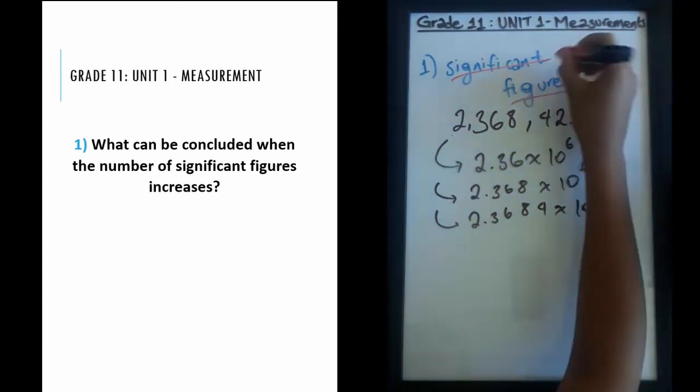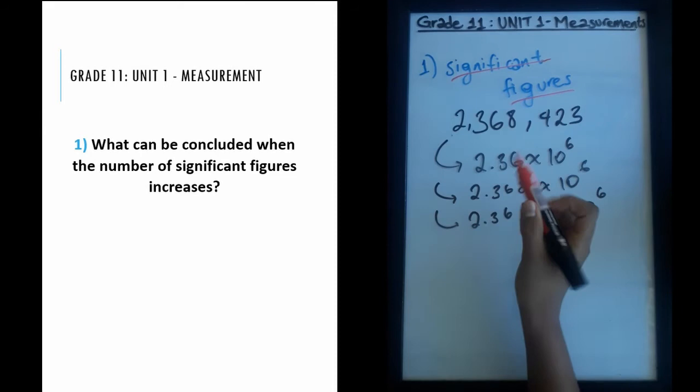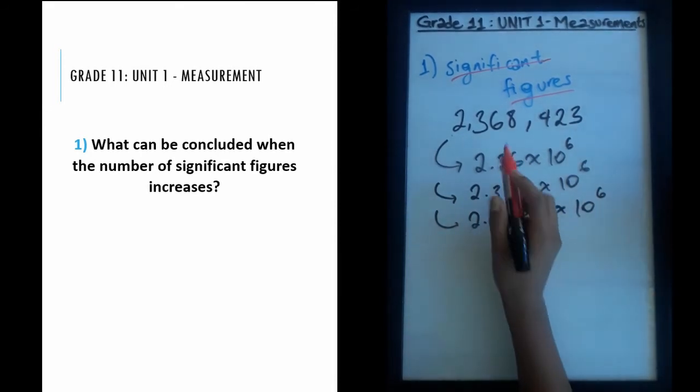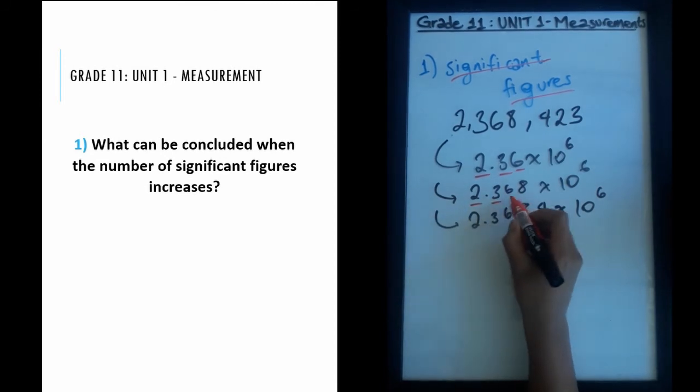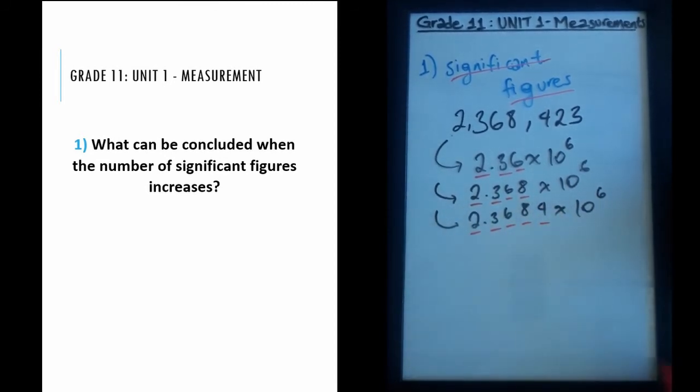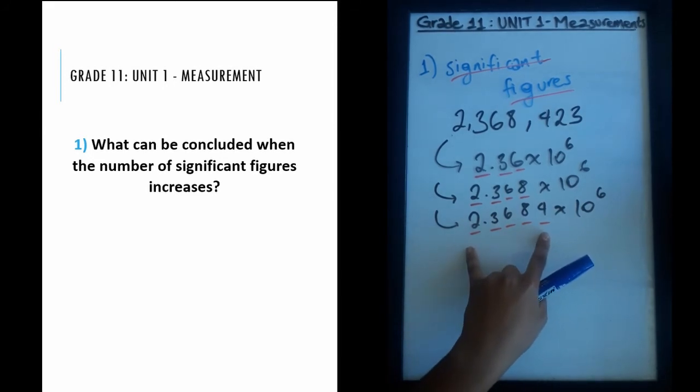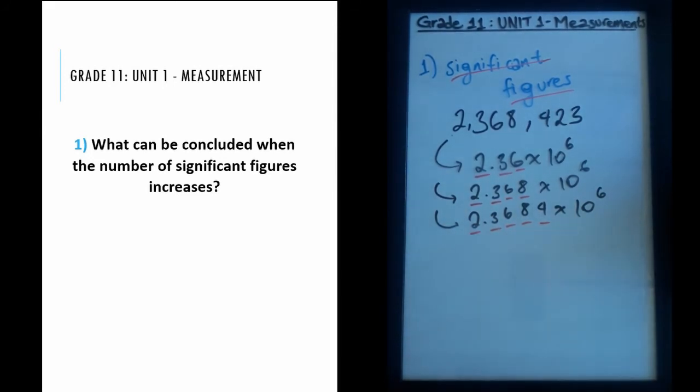All of these represent the same number, but their difference is their number of significant figures. The significant figures vary. Here I would have 1, 2, 3 significant figures. Here I would have 4 significant figures. And here I would have 5 significant figures. Basically the non-zero numbers that are present within our scientific notation. This shows an increase in significant figures, which is our question. What does an increase in significant figures conclude or indicate?